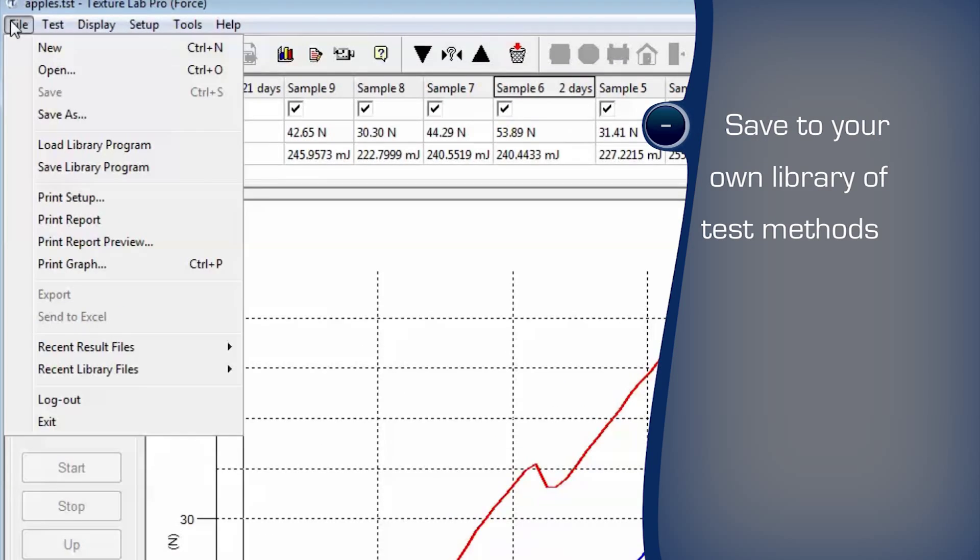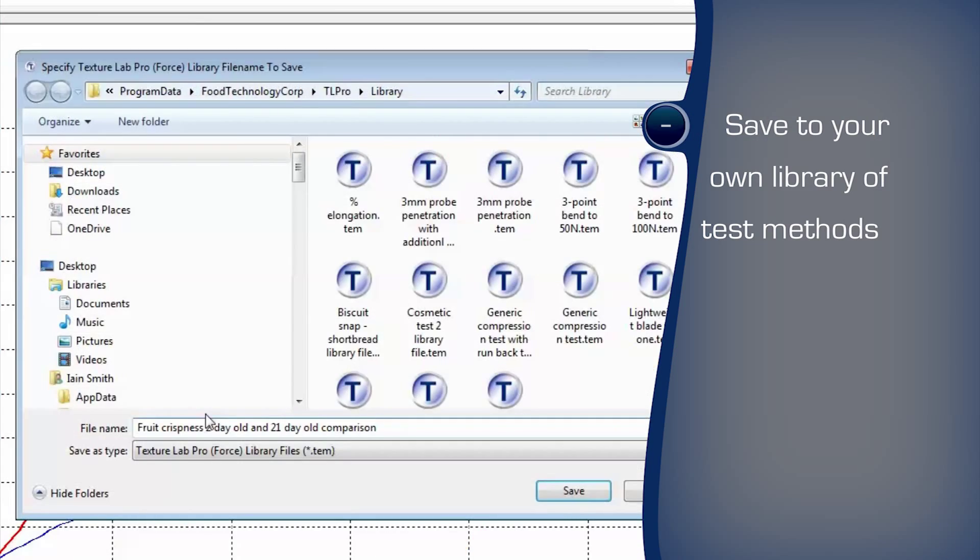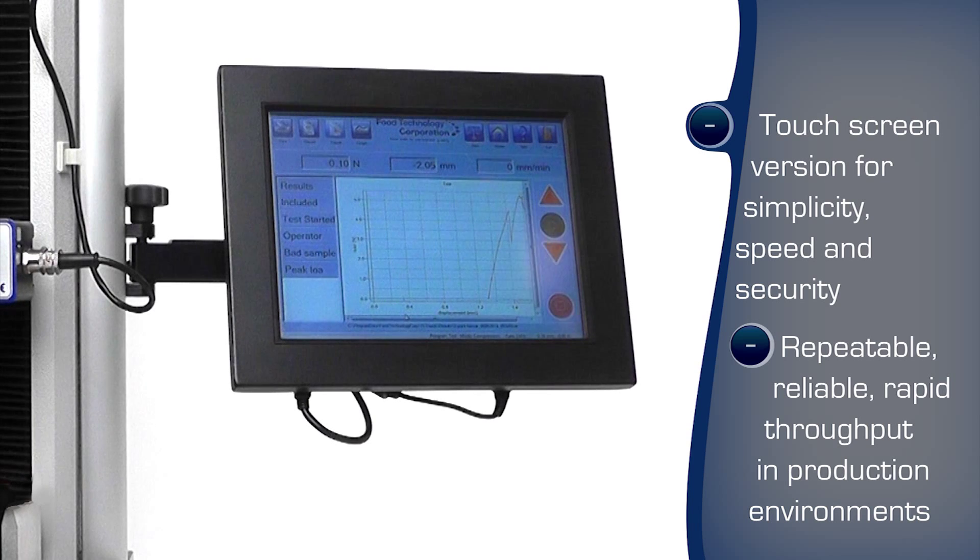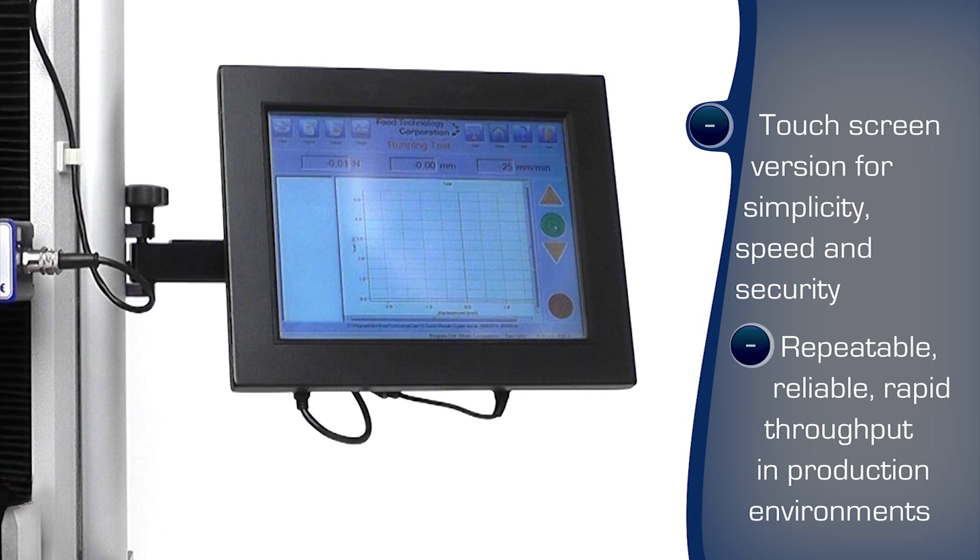The program can be saved to a library and recalled for reuse. The Touchscreen Control Texture Analyzer runs tests at the push of a button with minimal training, ideal for production areas.